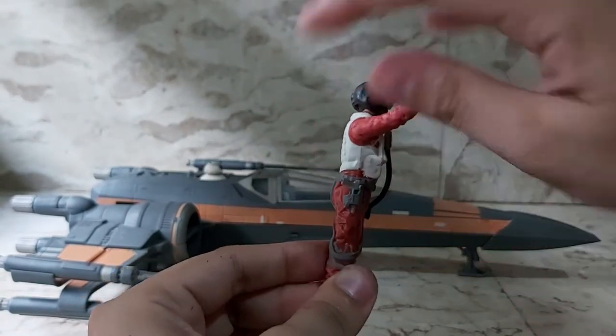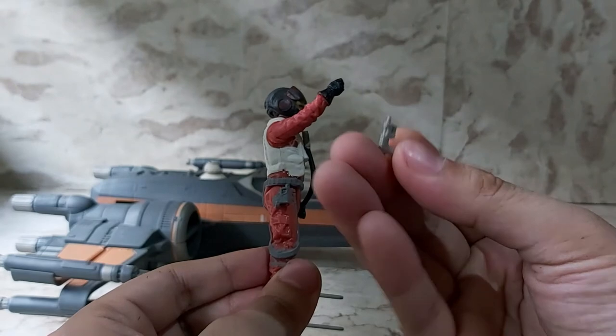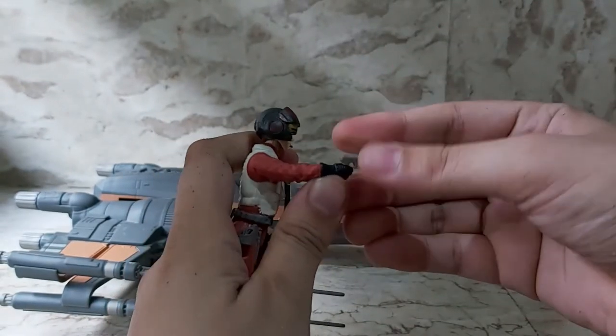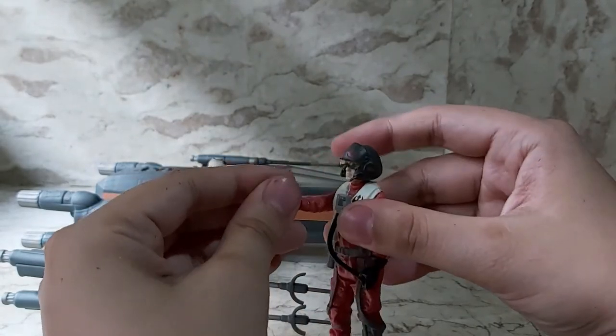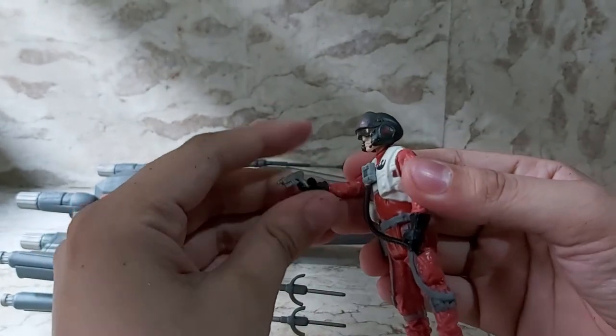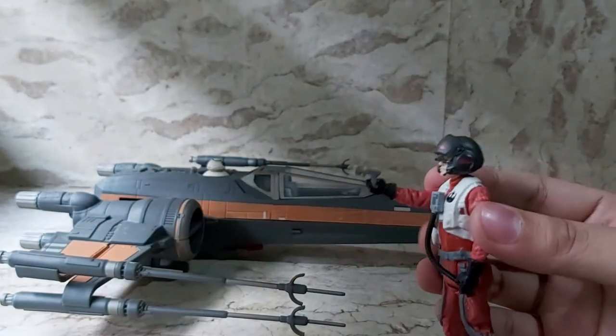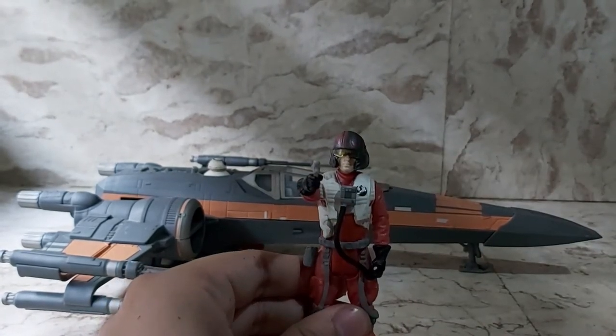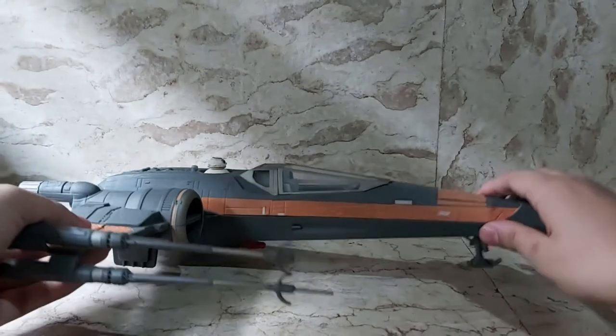So there he is, Poe Dameron. By the way, the pistol comes out, tiny little gray blaster pistol, and you can fit it in his hand. If Poe has to get off his ship and engage in a gunfight, he can do that. That's his only accessory.